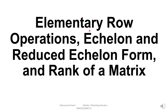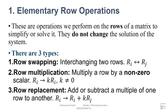Elementary row operations. These are operations we perform on the rows of our matrix to simplify or solve it. They do not change the solution of the system.